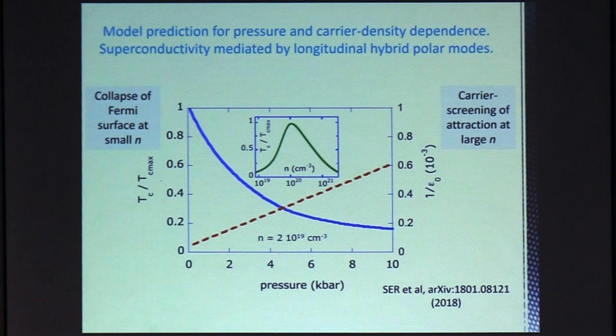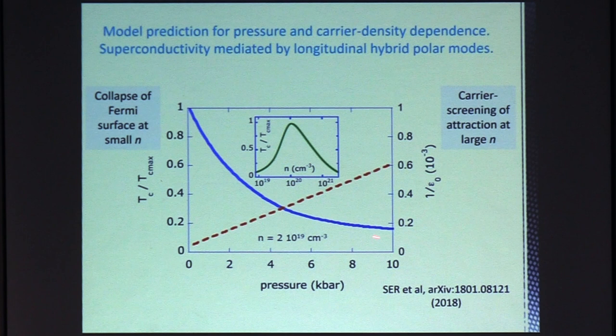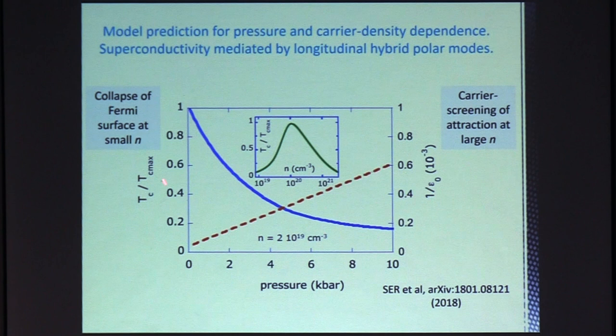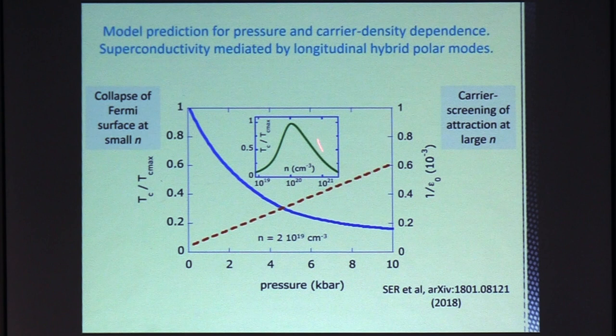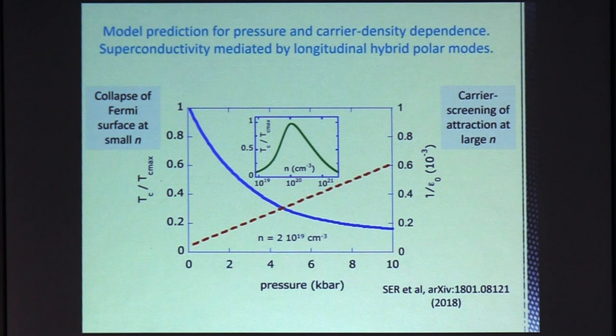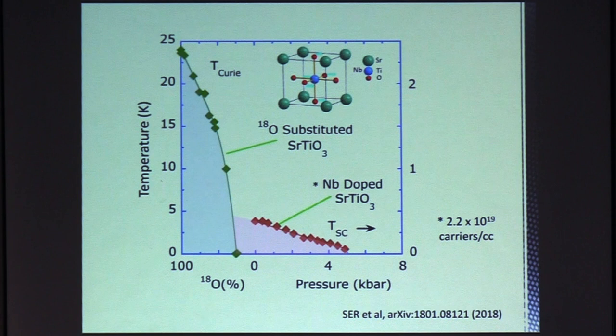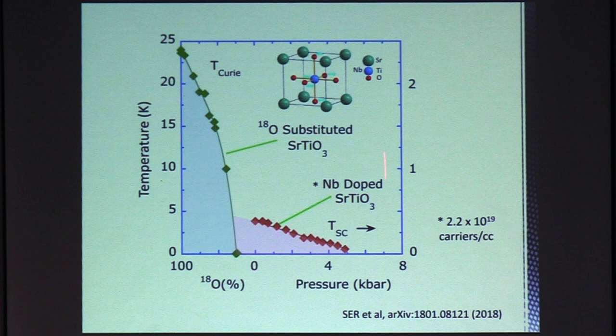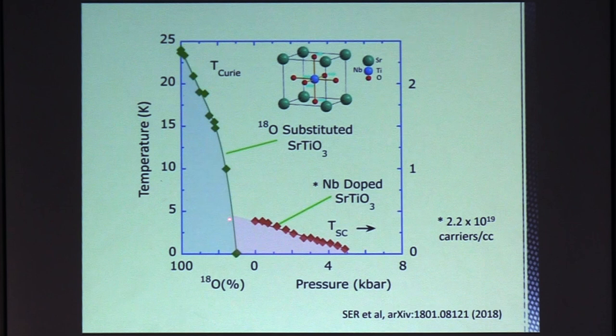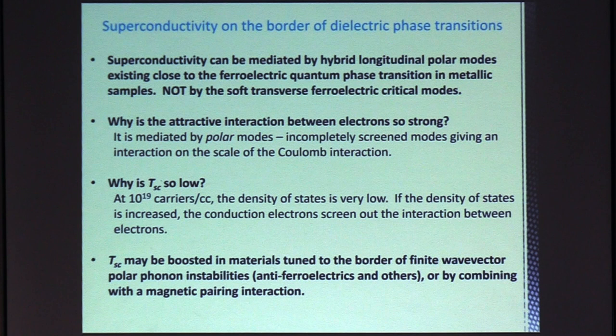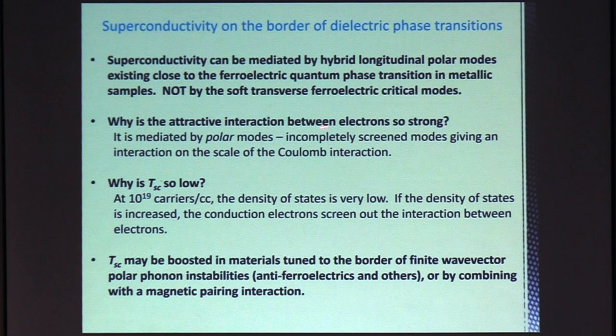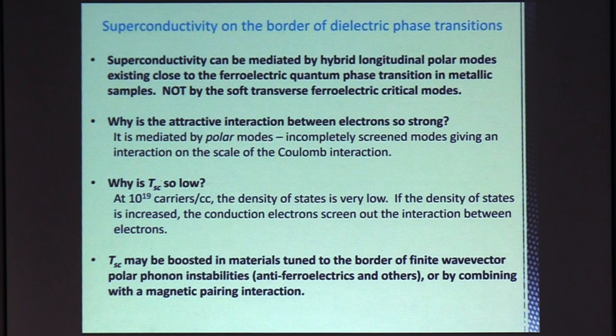So using this, this is the resulting phase diagram that we found. So the superconducting TC here, you can see is suppressed quite rapidly with pressure. TC max, the estimates for TC max here is around half a Kelvin. So it's giving the right order of magnitude. And we also recreate this dome of the TC versus carrier density. So this model seems to roughly account for the key properties of superconductivity in STO. So putting it together, the phase diagram may look something like this, where we see as you approach the quantum critical point, in electron-doped strontium titanate, superconductivity seems to be enhanced in this region.